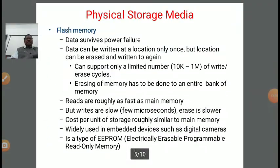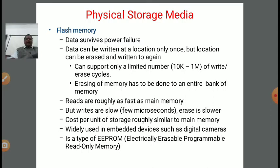Next is flash memory. In flash memory, data survives power failure — meaning even if power fails, data will not be lost. Data can be written at a location only once, but a location can be erased and written to again. It can support only a limited number of write or erase cycles — from 10 KB to 1 MB. Erasing of memory has to be done on an entire bank of memory. Reads are roughly as fast as main memory, but writes are very slow — a few microseconds — and erase is even slower.